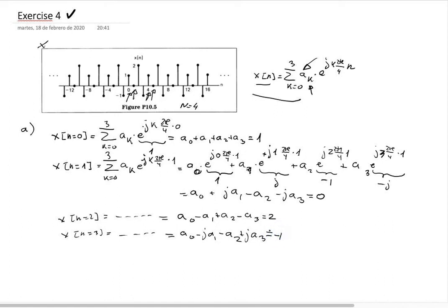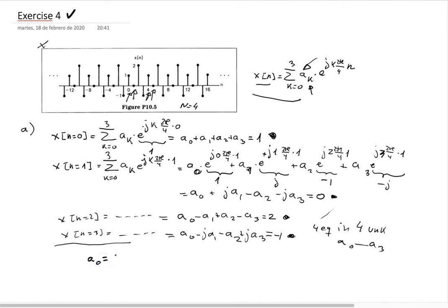So at the end of this process we have four equations in four unknowns — a_0 through a_3. Using any standard method to solve the system, we get: a_0 = 1/2, a_1 = −(1 + j)/4, a_2 = 1/2 + 1 (i.e., 1/2), and a_3 = −(1 − j)/4.